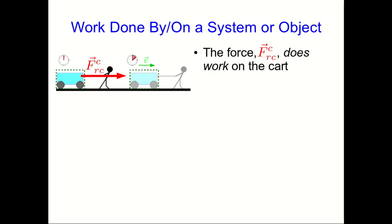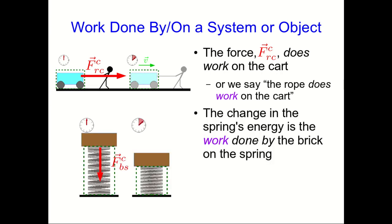I want to talk about use of language for a moment because it's useful. In this case, with the rope exerting a force on the cart and causing the cart's energy to change, we say that the force exerted by the rope on the cart does work on the cart — or alternatively, the rope does work on the cart. Similarly, in the case of the brick compressing the spring, there's a change in the spring's energy; that's what we call the work done by the brick on the spring, or done by the force exerted by the brick on the spring.